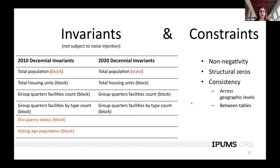The invariants for the 2020 decennial census will be total population at the state level, total housing units at the block level, and the number and type of group quarters facilities at the block level. There are some key differences from 2010 invariants: in 2010, total population was held invariant all the way down to the block level, and there were also invariants on occupancy status and voting age population all the way down to the block level. Those are no longer the case — noise will be introduced into these counts for the 2020 census.